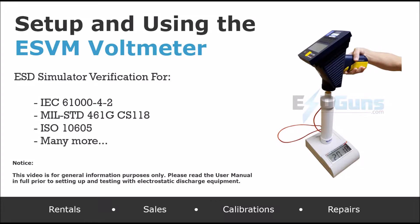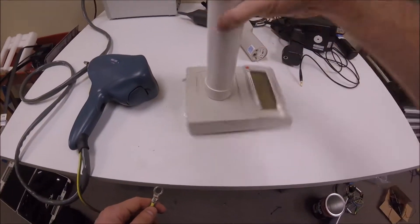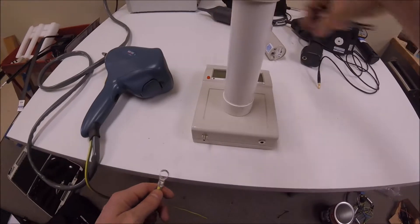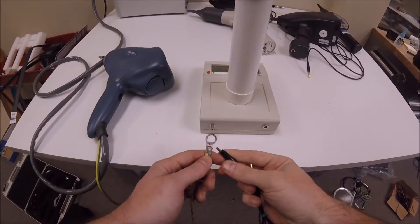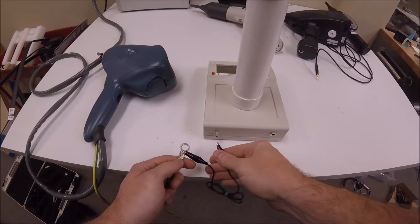The ESVM meter is a simple unit for verifying the output voltage of your ESD simulator. Starting with the NSG438, which has a closed loop on the ground cable, we can use an alligator clip to connect to the ground on the meter.